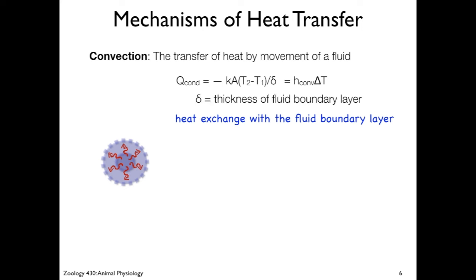The rate of heat transfer through convection is going to be related to the thickness of the fluid boundary layer and also the amount of surface area that's exposed, the temperature gradient, and also the rate of flow of the fluid. Therefore, convection often can be much much much higher than conduction.